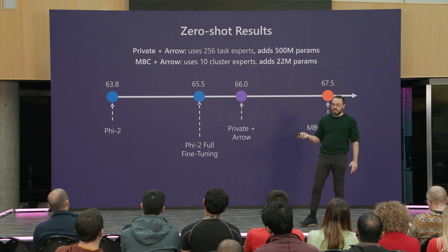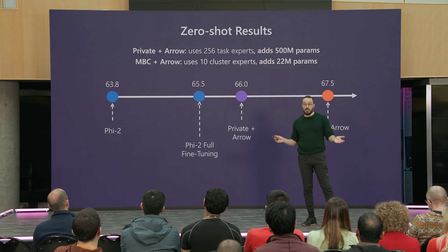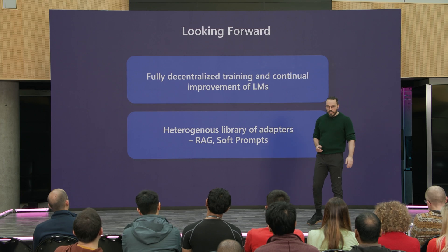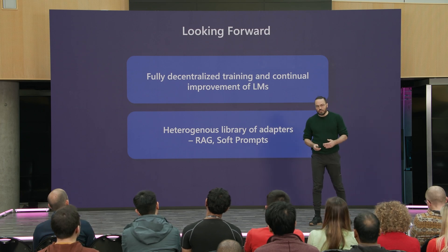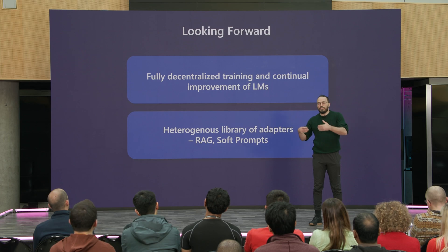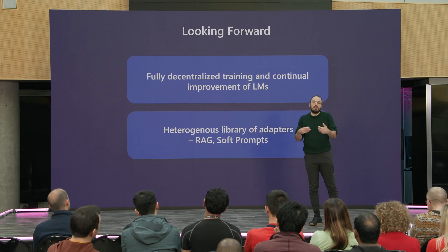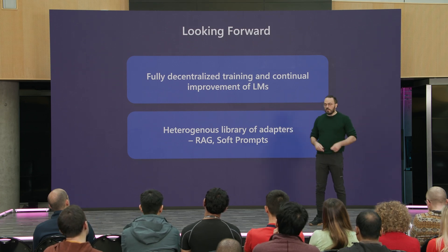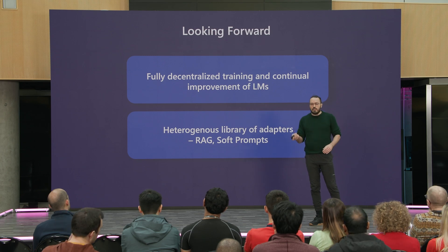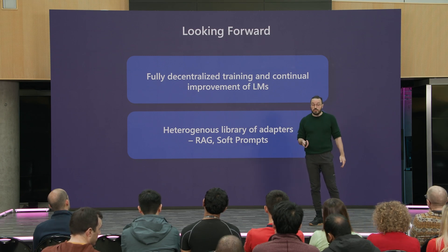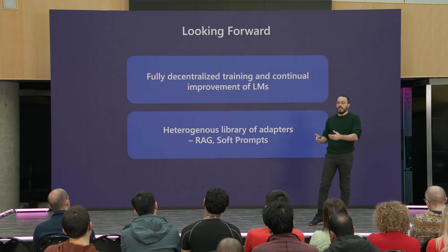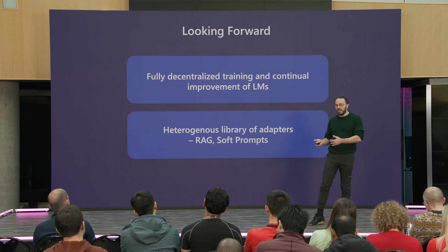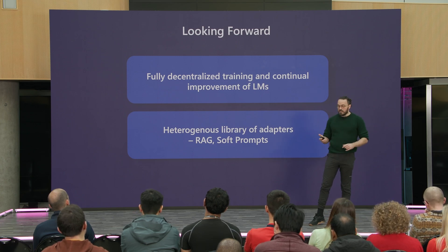This last method, MBC plus Arrow, adds only 22 million parameters to the model. Looking forward, I believe an exciting direction would be to push this to fully decentralized training and continual improvement of language models, where people train their own experts, give them to the platform, and the model gets better. The other direction is a heterogeneous library of adapters, where we can add different kinds of adapters each with its own inductive biases, expanding the capabilities even further.